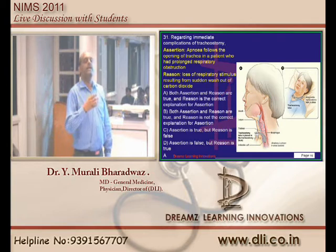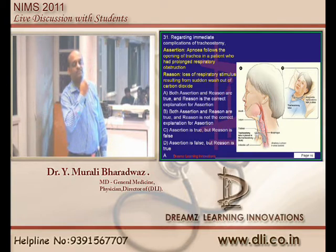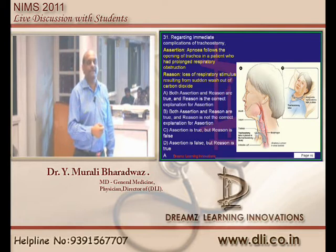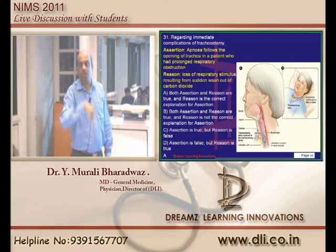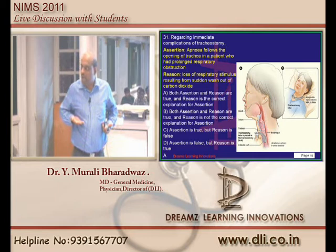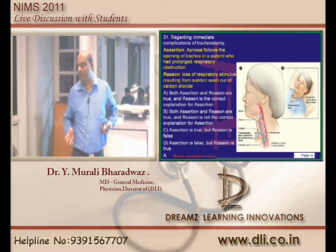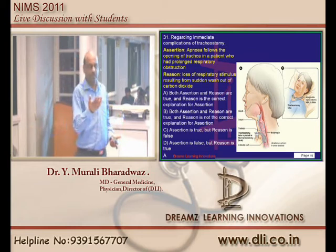A simple way to remember: if the pathology is at the level of the trachea - like hanging - neither CO2 comes out nor oxygen goes in, that is type 2. If the pathology is at the alveolar level like pulmonary edema, CO2 can still travel but oxygen cannot. So it becomes type 1. That is what we need to understand.